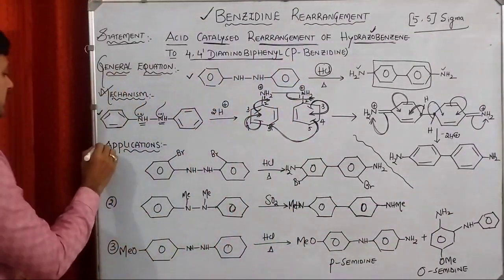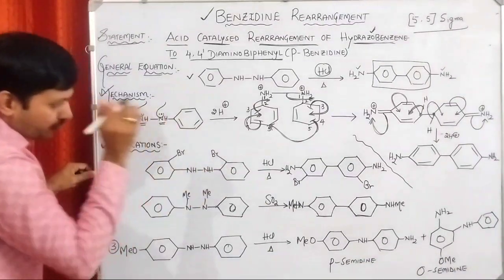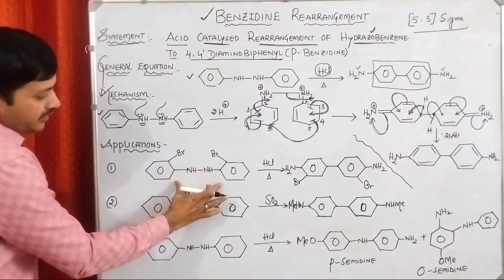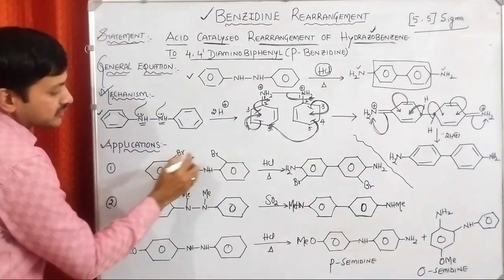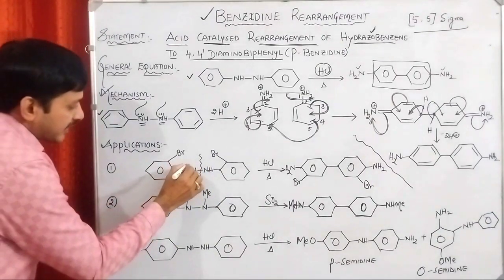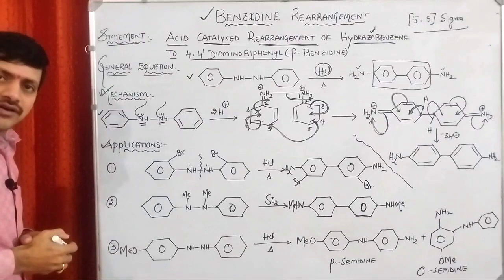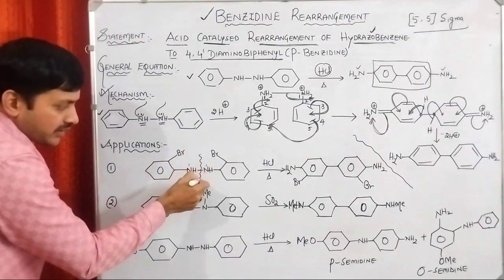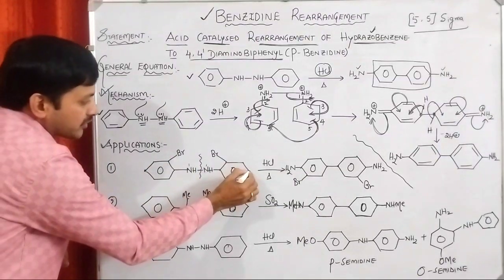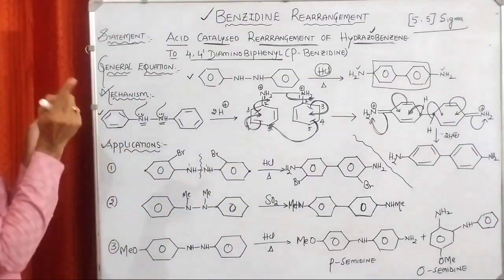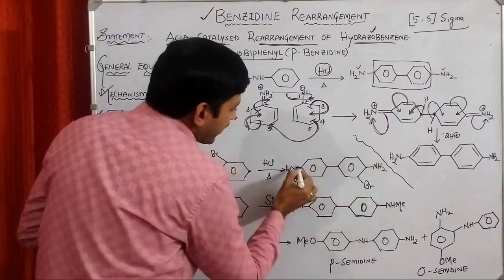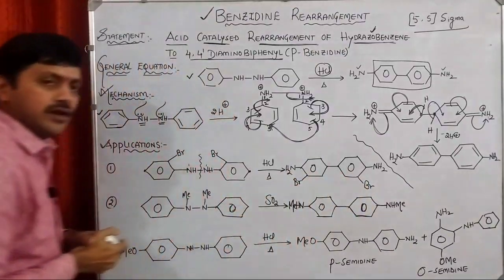Let us see the applications. In the first application, we have taken hydrazobenzene with two bromine substituents at the ortho positions. The N–N single bond (the 1,1-bond) is subjected to cleavage. Then, the fifth position of one ring connects to the fifth position of the other ring — forming a biphenyl. We obtain two amino groups and bromines at those positions — giving a substituted parabenzidine product.